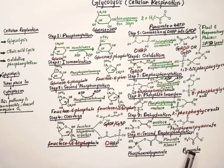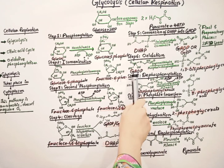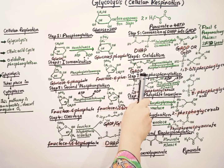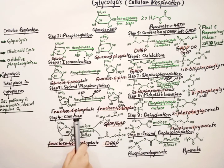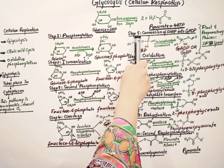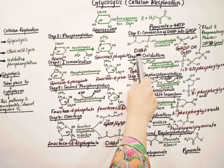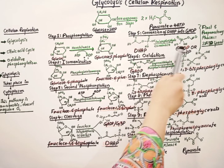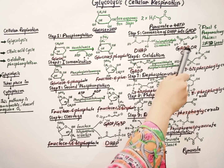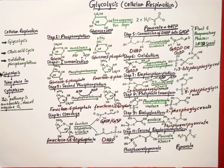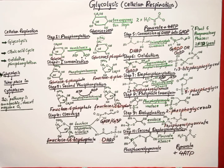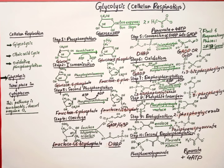After all these steps we get 2 pyruvate molecules, because we had 2 molecules of G3P — one from the cleavage in step 4 and one from the DHAP conversion in step 5. So after all these steps, we get 2 pyruvate molecules along with 4 ATP. This is all about glycolysis.